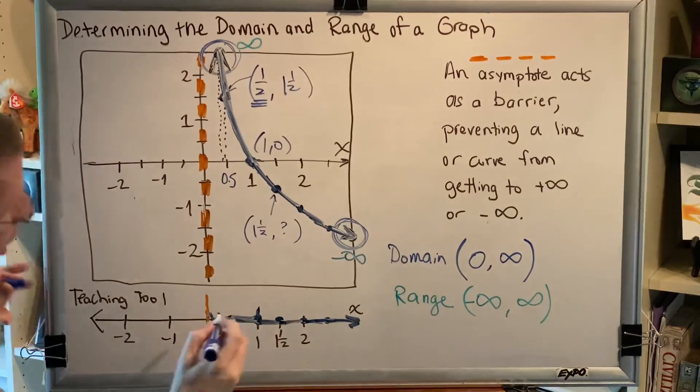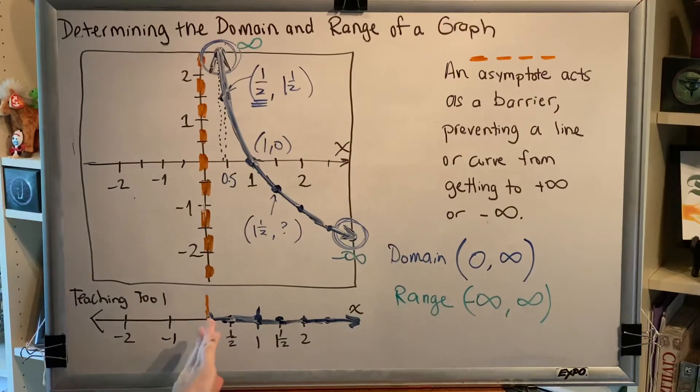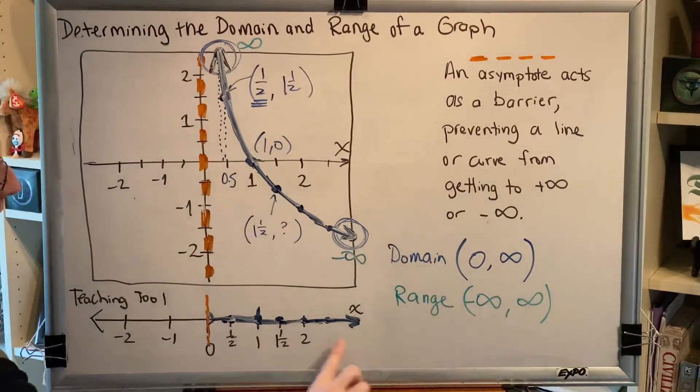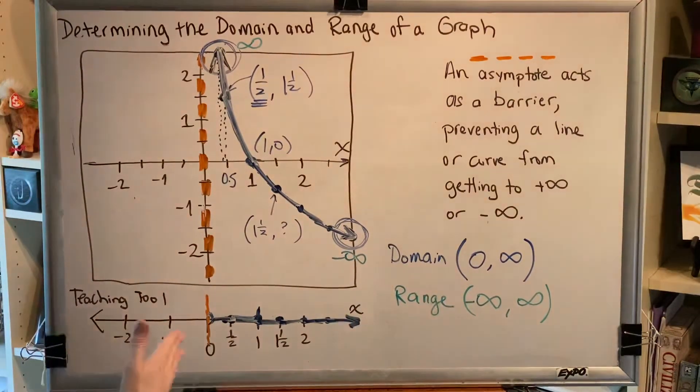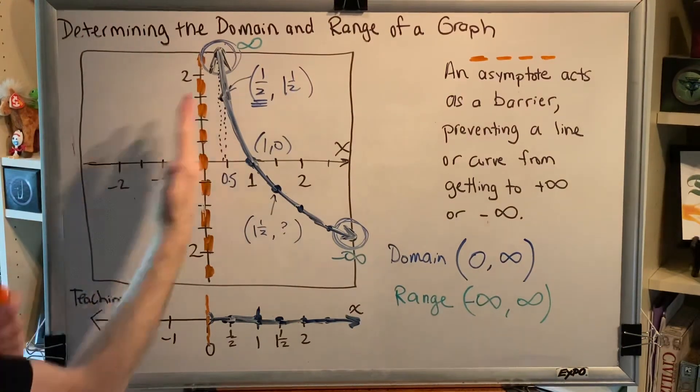And we have all of these values. This is the reason why the domain goes from zero to infinity and does not include any values that are over here.